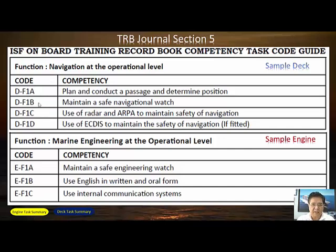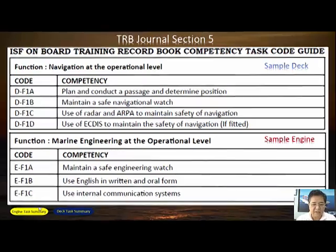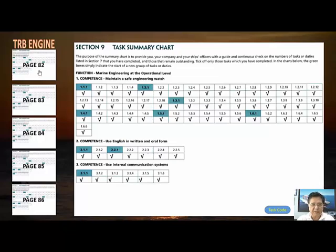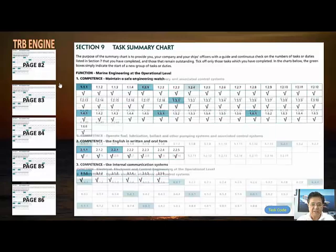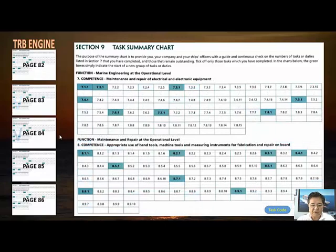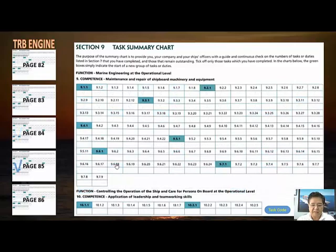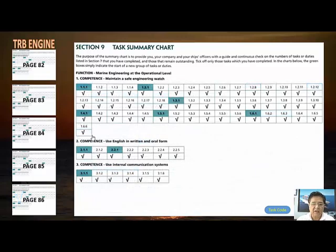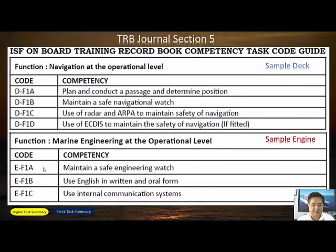Now let's check the engine task summary. Go to page 82, section 9 of the engine logbook. Three competencies have also been done there. Check pages 83, 84, 85, 86 — not yet done. Only page 82 has completed entries. Copy those competency names, then find their task codes in the same way as the deck side.